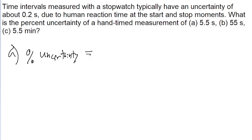For part A, for example, our measurement is given as 5.5 seconds. To find the percent uncertainty, we take our uncertainty, 0.2 seconds, divide it by 5.5 seconds, and then multiply by 100 to convert it into a percentage.